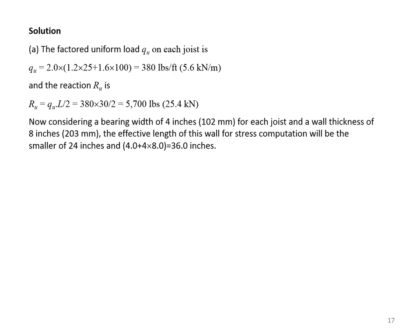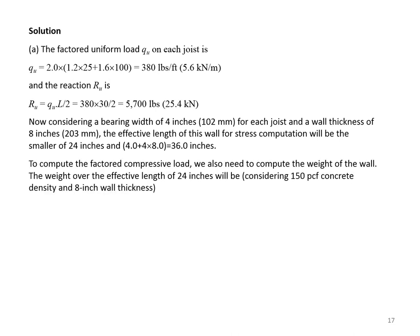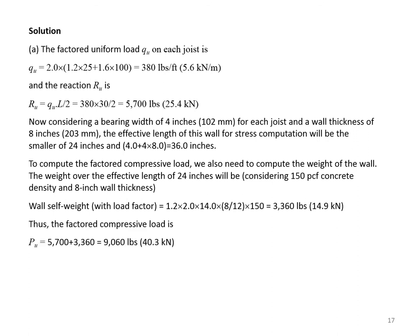Considering a bearing width of 4 inches for each joist and a wall thickness of 8 inches, the effective length is the smaller of 24 inches and 36 inches, so 24 inches. The wall weight over the effective length is 1.2 × 2 ft × (8/12) ft × 14 ft × 150 pcf = 3,360 pounds. Therefore, the factored compression load is 5,700 + 3,360 = 9,060 pounds.